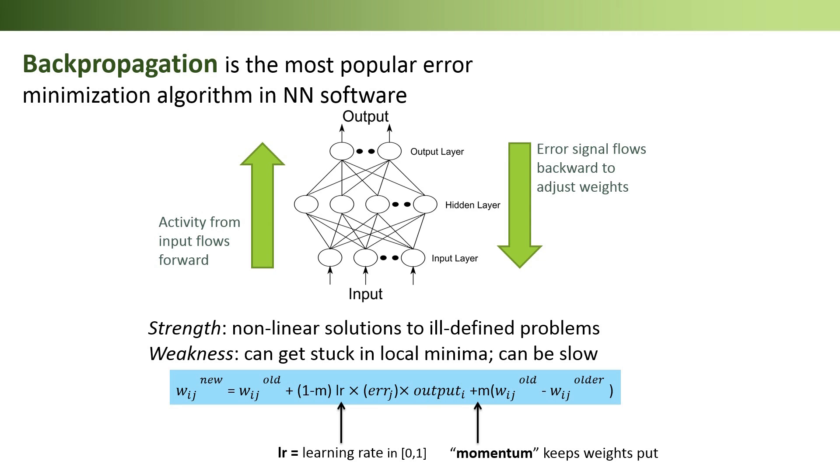These details are not critical on their own, but they explain why neural network software has so many parameters that the user can tweak. It also shows why you can get very different results using different software or different parameter choices.